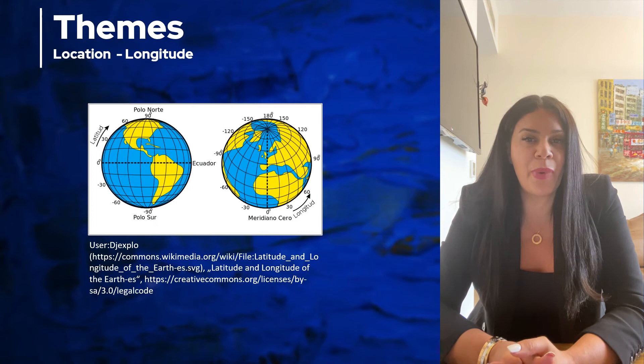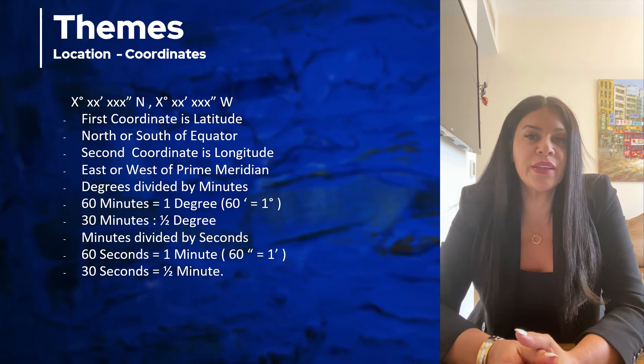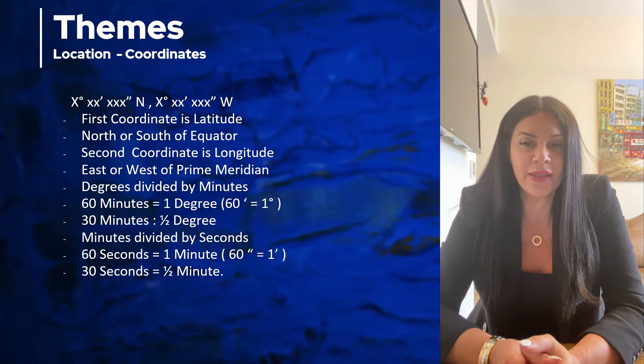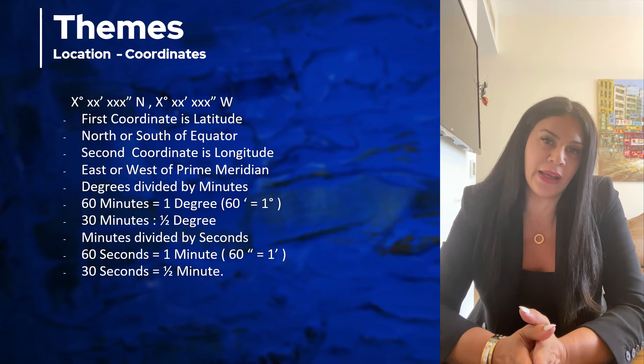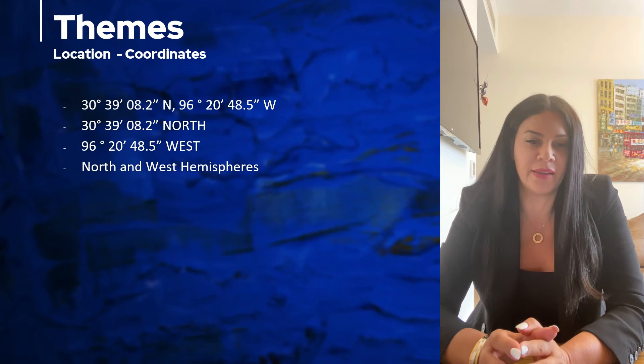Latitude and longitude together are specially used in coordinates. Coordinates are kind of an address where latitude is listed first and then longitude, because a location is the intersection of a line of latitude and a line of longitude. Latitude and longitude are divided into minutes and minutes into seconds.